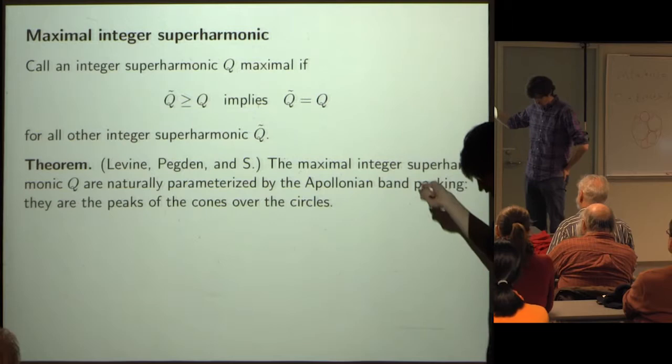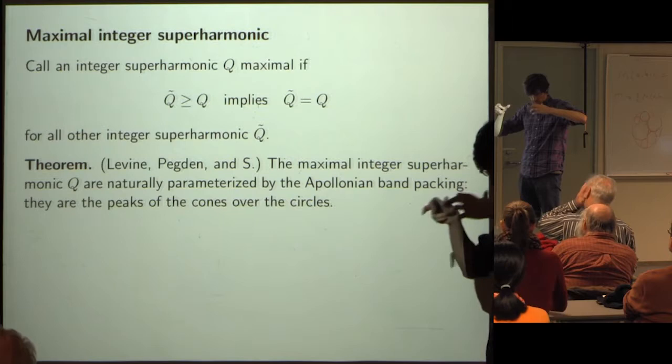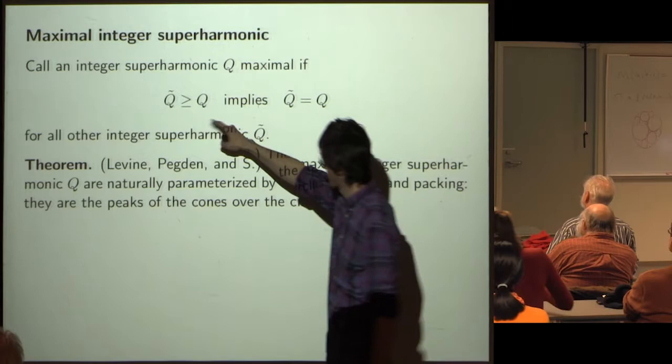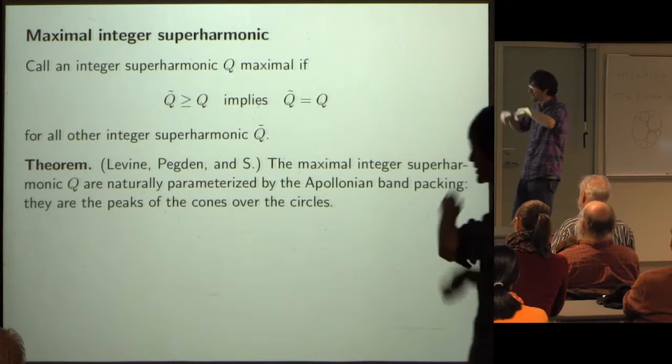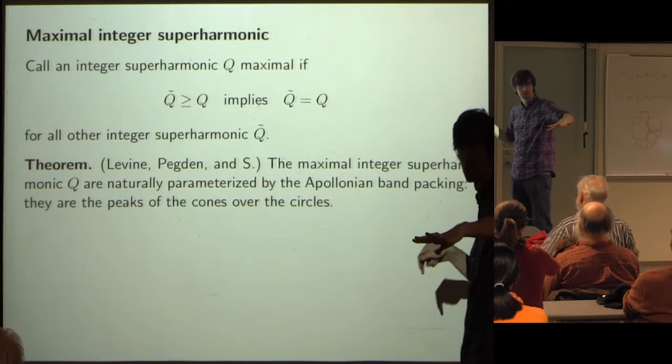Here is the theorem: the maximal integer superharmonic quadratics — those whose growth cannot be improved — are exactly the peaks of the cones over the circles in the Apollonian circle packing.